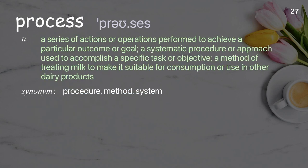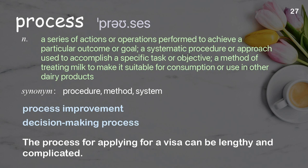Process: A series of actions or operations performed to achieve a particular outcome or goal; a systematic procedure or approach used to accomplish a specific task; a method of treating milk to make it suitable for consumption or use in other dairy products. Examples: Process improvement, Decision-making process. The process for applying for a visa can be lengthy and complicated.